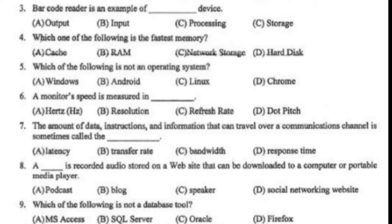Barcode reader is an example of an input device. Which one of the following is a fast test memory? Cache memory.